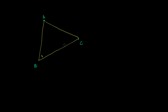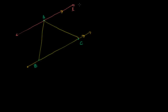Now I'm going to start the actual proof by constructing a line that is parallel to line segment BC, but goes through point A. That line might look something like this — I'll call it line L. I've constructed line L in a way that it is parallel to line BC.